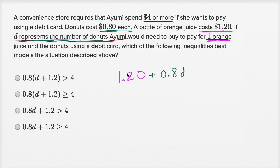So this is what she's spending on that one orange juice, and this is what she's spending on the D donuts. And in order to use her debit card, she needs to spend four dollars or more. So this thing right over here needs to be greater than or equal to four dollars. Once again, greater than four dollars, that's the or more, but it could also be exactly four dollars, and that's why we have the equal sign right over here.